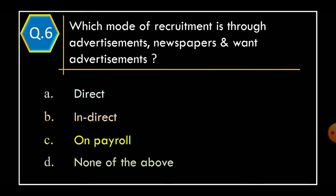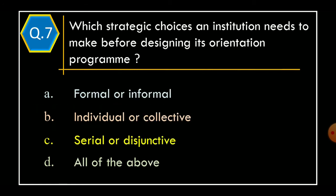Question 6. Which mode of recruitment is through advertisement — newspaper and want advertisement? Option A: Direct. Option B: Indirect. Option C: On payroll. Option D: None of the above. The correct option is Option B: Indirect.